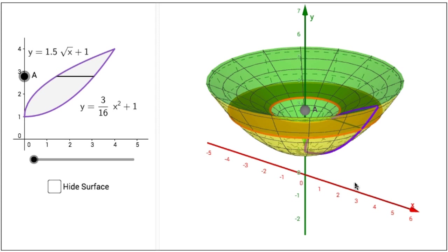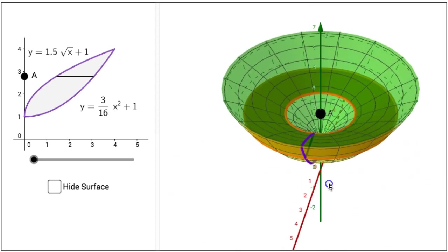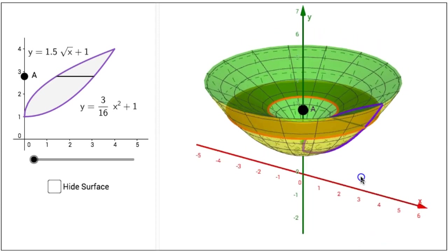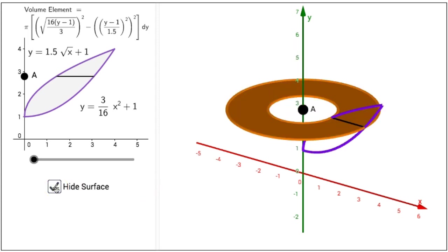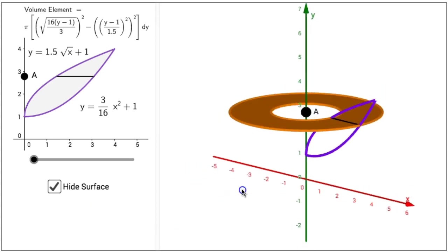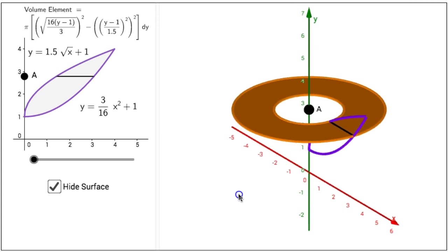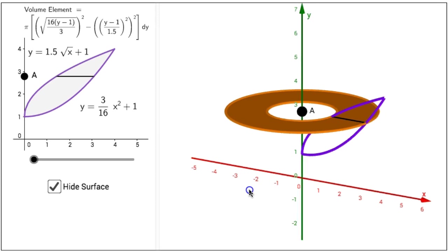If you click in the 3D view on the right side of the interactive figure, you can drag the view and observe the solid from different vantage points. If you click on the hide surface checkbox on the lower left side, removing the surface from the view leaves just the washer. The volume of that washer, or the volume element, is given in the upper left side of the interactive figure.